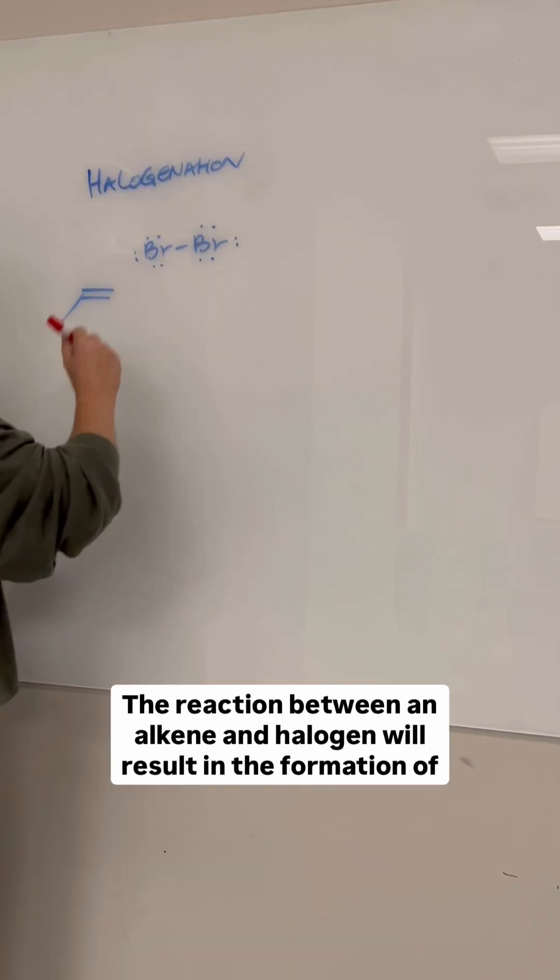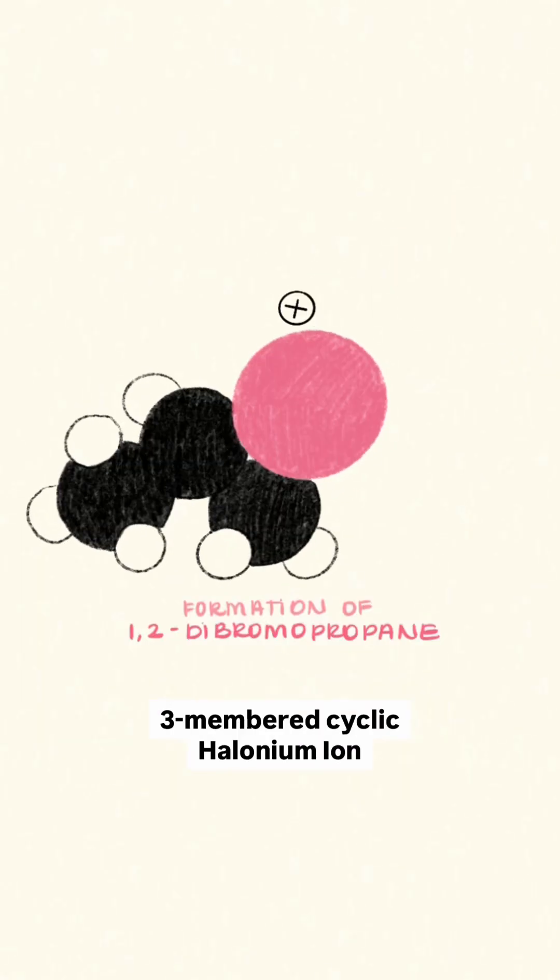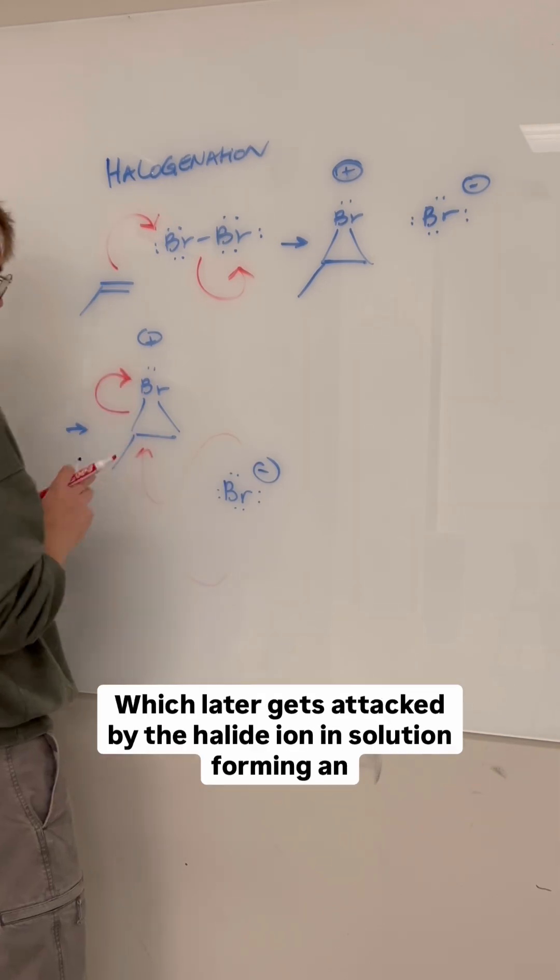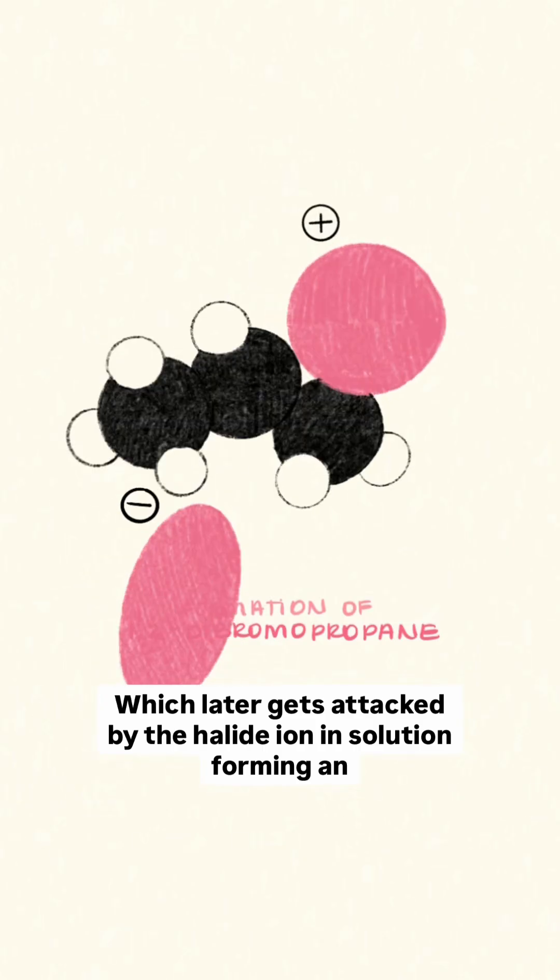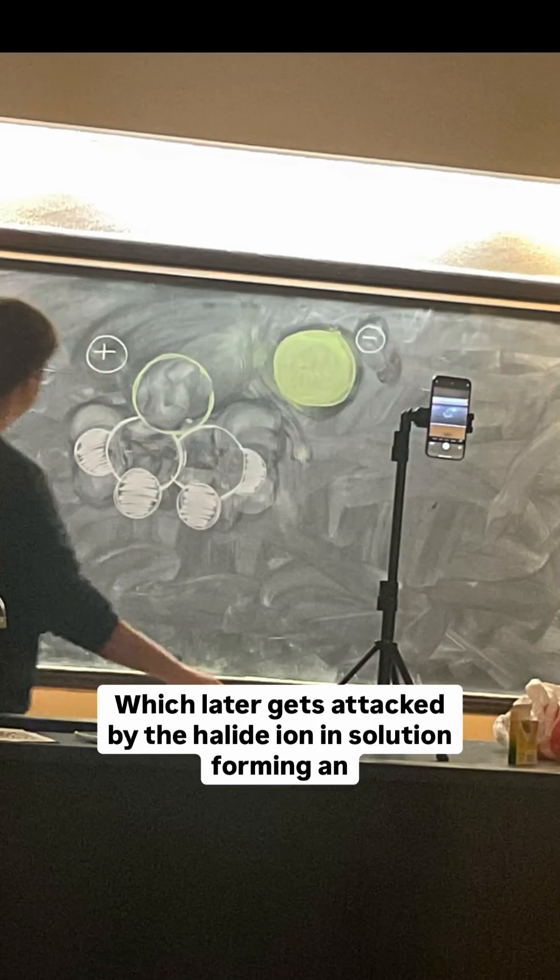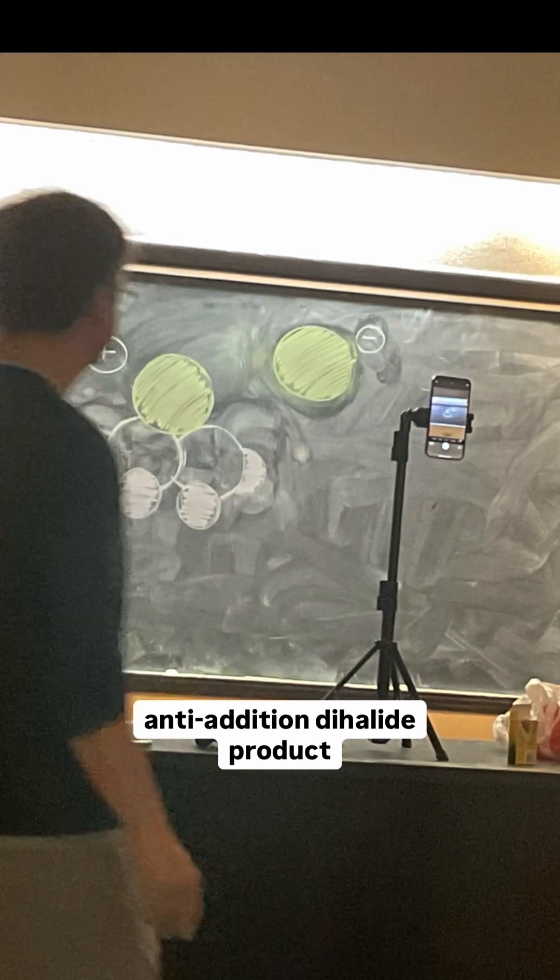The reaction between an alkene and a halogen will result in the formation of a three-membered cyclic halonium ion, which later gets attacked by the halide ion in solution, forming an anti-addition dihalide product.